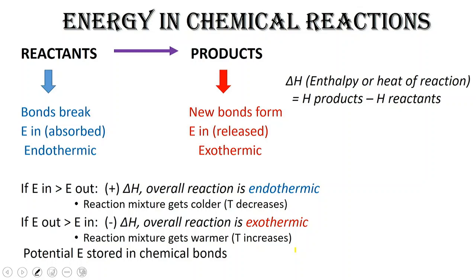Let's take a closer look at what happens when reactants go to form products. In any chemical reaction, you have reactive compounds or atoms. Any bonds in the reactants have to be broken, and in order to break bonds, energy has to go into the system. So bond breaking is an endothermic process. Whereas when we're forming bonds in the products, the opposite occurs and we end up releasing a certain amount of energy — that process is exothermic.